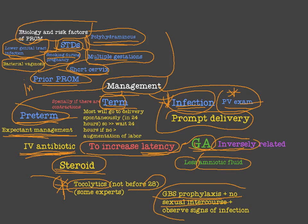In term rupture of membrane, especially if contractions are present, deliver the patient immediately. Most term cases will go to delivery spontaneously — about 90% within 24 hours. So you wait 12 to 24 hours, and if there are no signs of starting labor, then you have to augment labor.